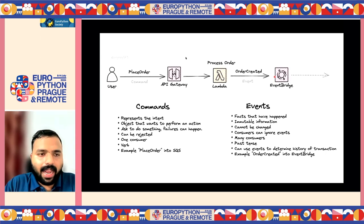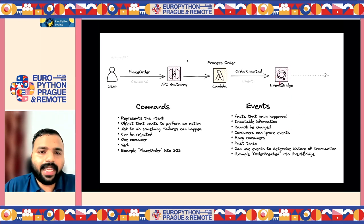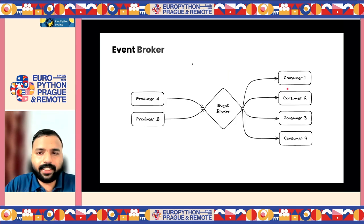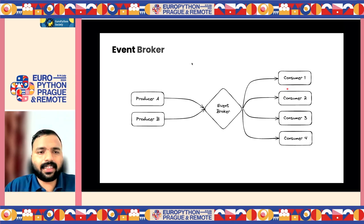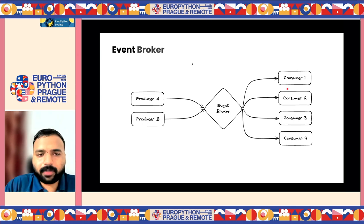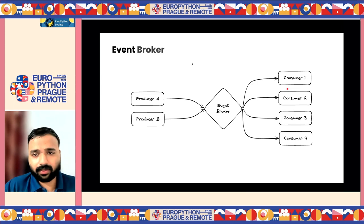That's the difference between commands and events. And here there's an EventBridge. What exactly is EventBridge? It's an Amazon service — basically an event broker. Event brokers stand between producers and consumers. It's like a middleman that receives all input information from the producers, and consumers subscribe to topics or subjects they want to handle.